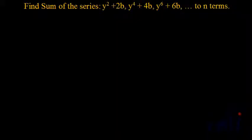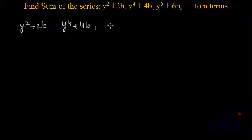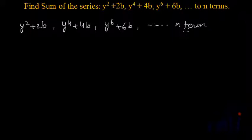Here we have a problem related to finding the sum of a pattern. In this pattern, the first term is y squared plus 2b, the second term is y to the power 4 plus 4b, the third term is y to the power 6 plus 6b, and this pattern continues till n terms. We have to find the sum of n terms of this pattern.